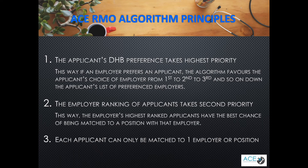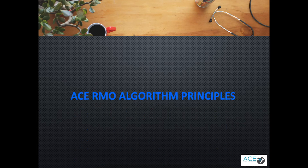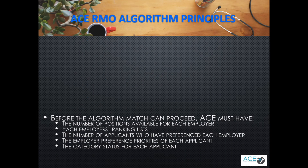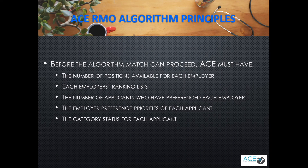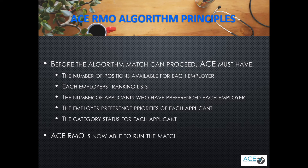What ACE ends up with is the number of positions available at each DHB, a list of DHB's applicants who want to work at it, and a list of applicants the DHB want to employ. ACE then uses this information and the algorithm priorities to match the applicants.